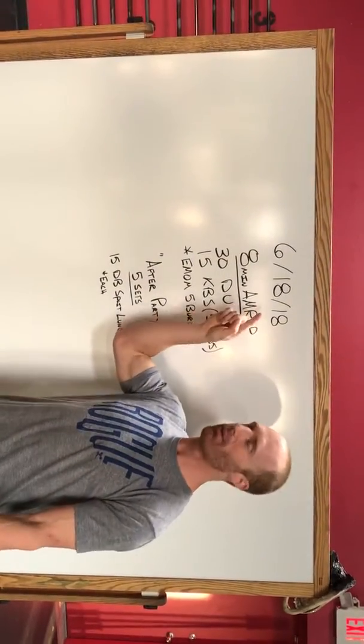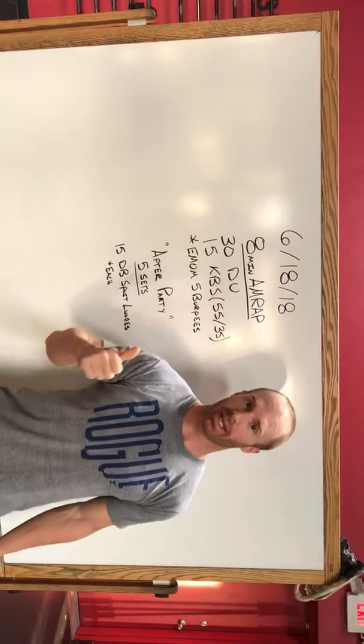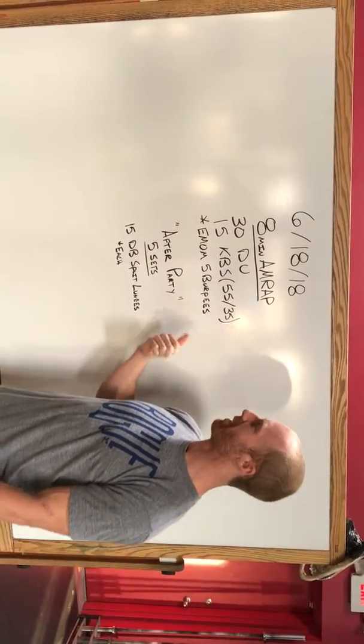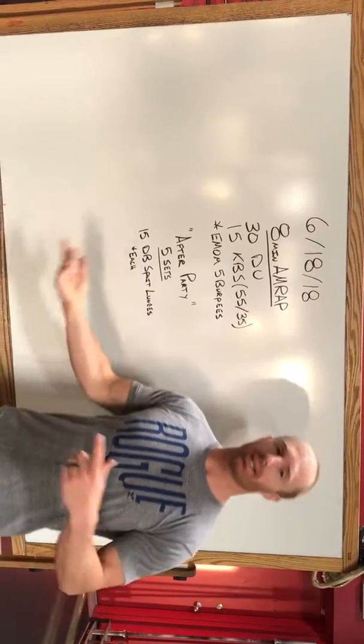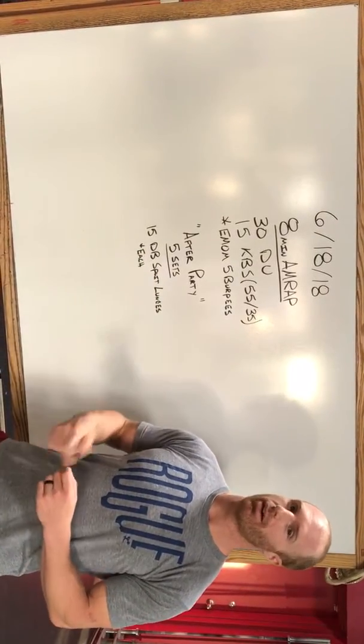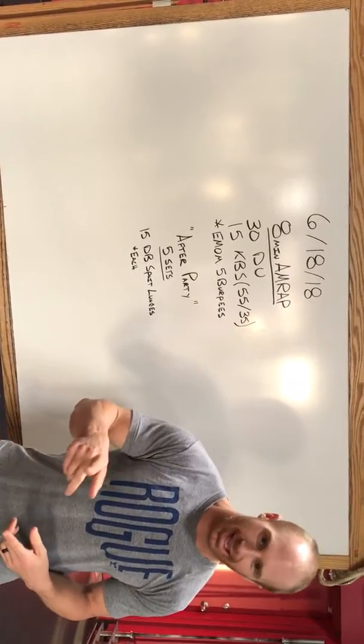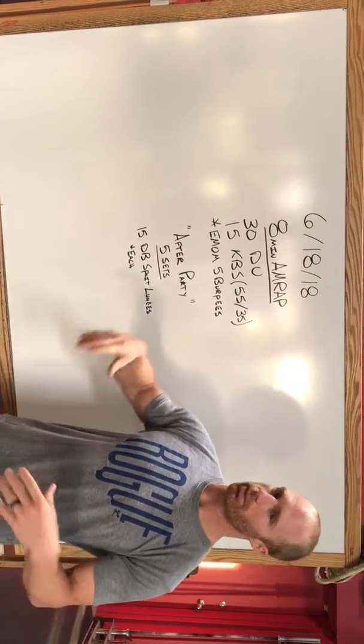Alright, so your Monday workout: we have an 8-minute AMRAP with 30 double unders and 15 kettle bell swings at 55 and 35 pounds. But the kicker is every minute on the minute you're gonna have to complete 5 burpees, and the workout starts off with 5 burpees. So 3, 2, 1, go—you'll complete 5 burpees.